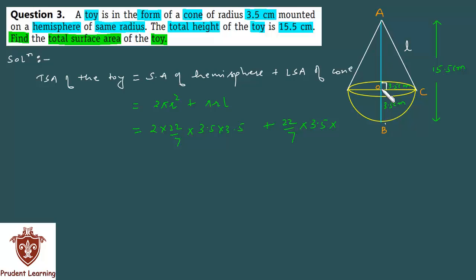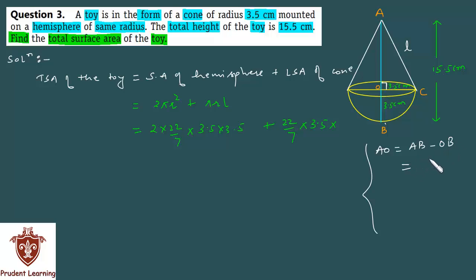So AO = 15.5 − 3.5 = 12 cm. We now have AO as 12 cm.